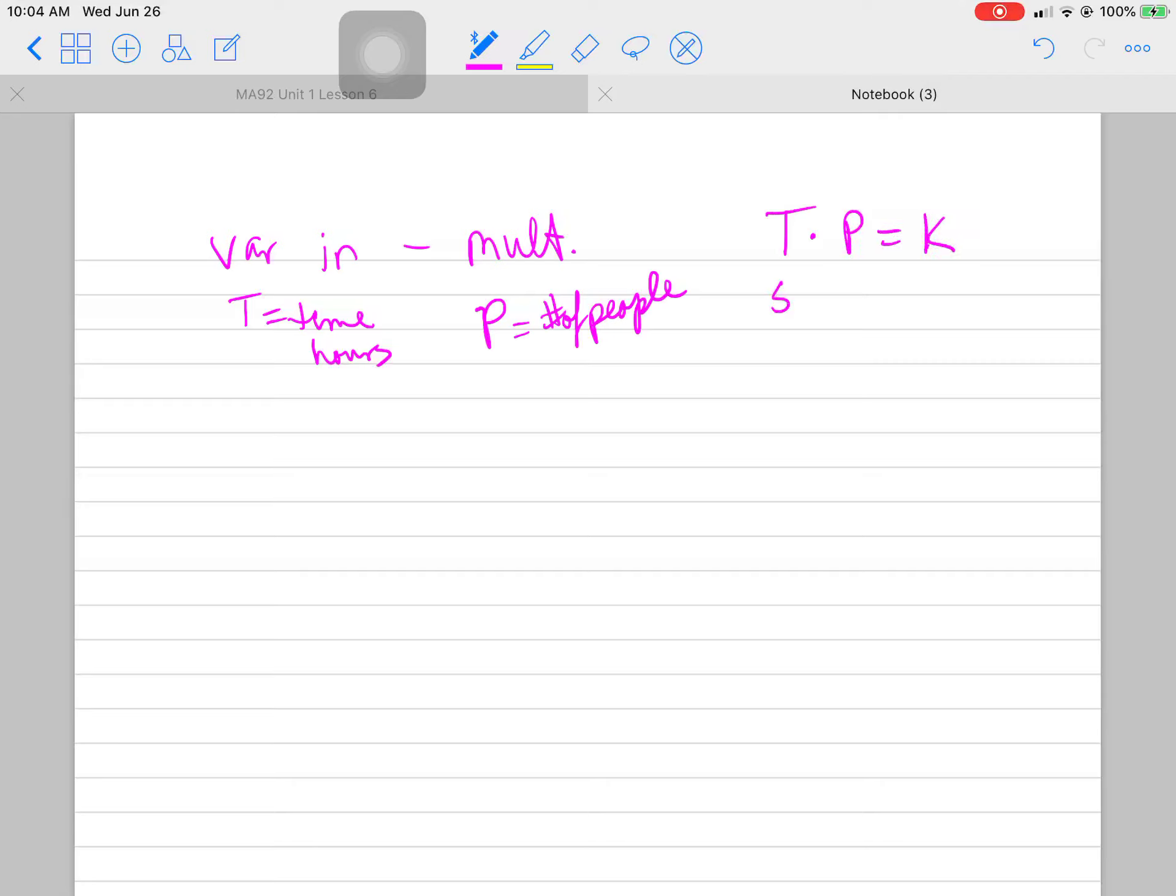What are the variables? The time required to do the job. And it's in hours. And varies inversely with the number of people working on it. Varies inversely. That means it's going to be T times P equals K. And then it tells you it takes five hours for seven bricklayers to do a particular job. So K equals 35.